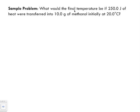So let's identify what are some of our givens. The question asks what would the final temperature be, so we know that Tf is something we're going to need to find. This is going to be our unknown. 250.0 joules—this is our q, the amount of heat required to transfer 10.0 grams, which is going to be our m value of methanol.